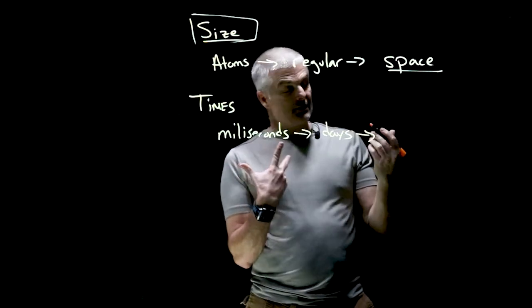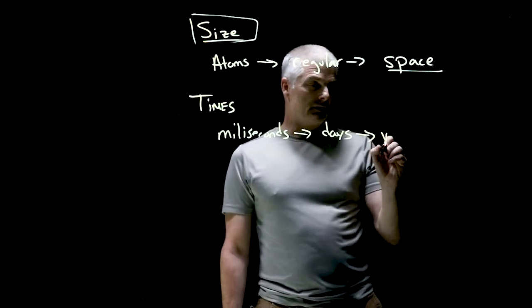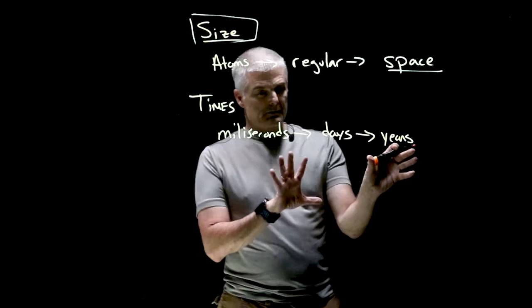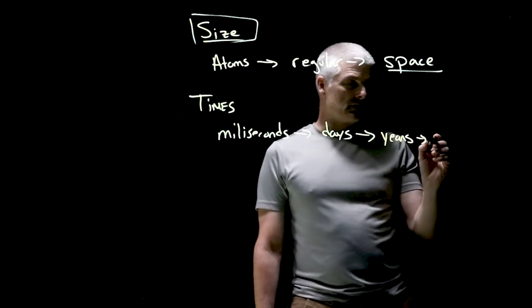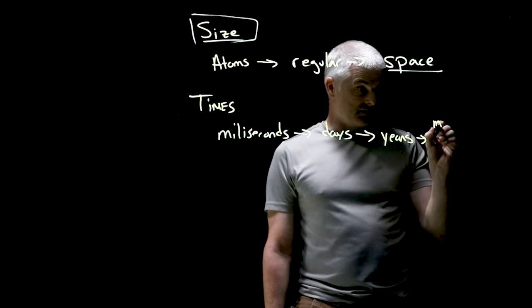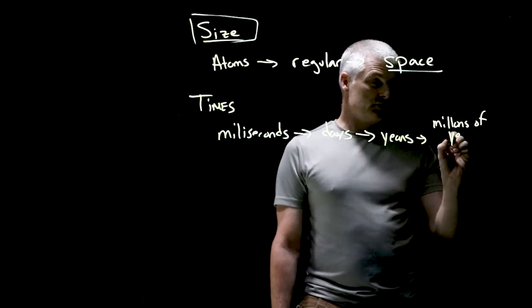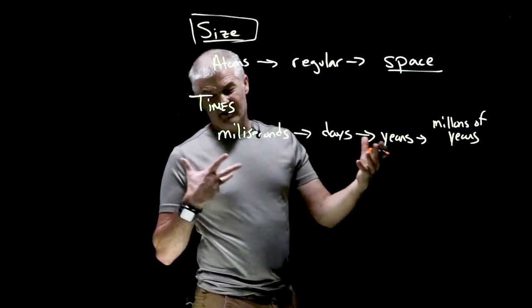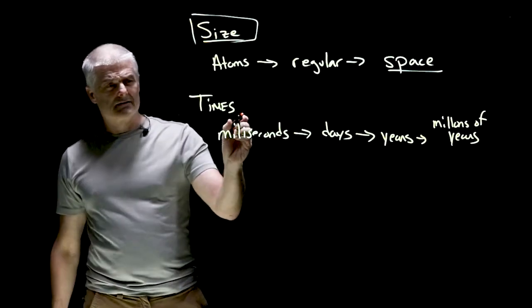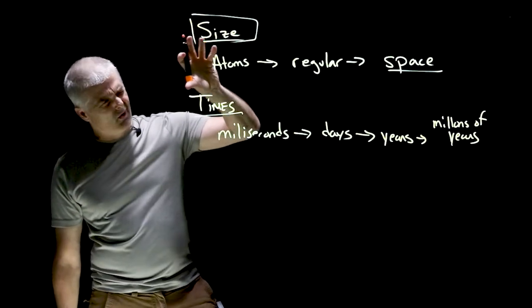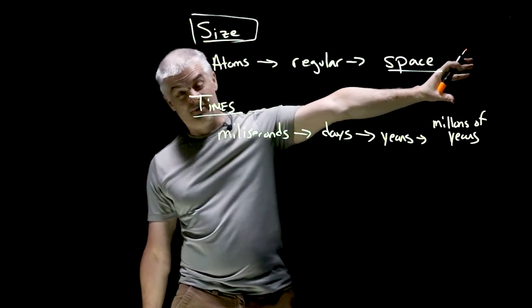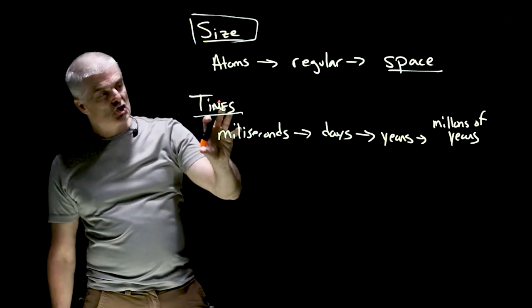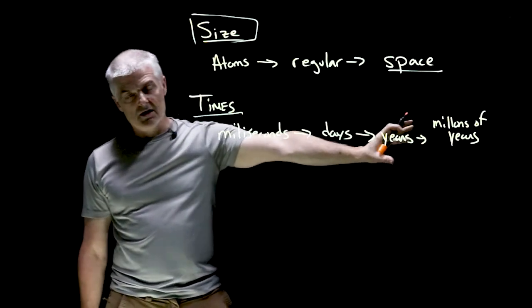But then we're going to start, especially when we talk about the earth history, we're going to talk about, well, years. Actually, years might be more like climate. And then we're going to talk about things like millions of years, which is how the earth is formed, things of that nature. So we're going to go from little to big in terms of stuff and short to crazy long in terms of time.